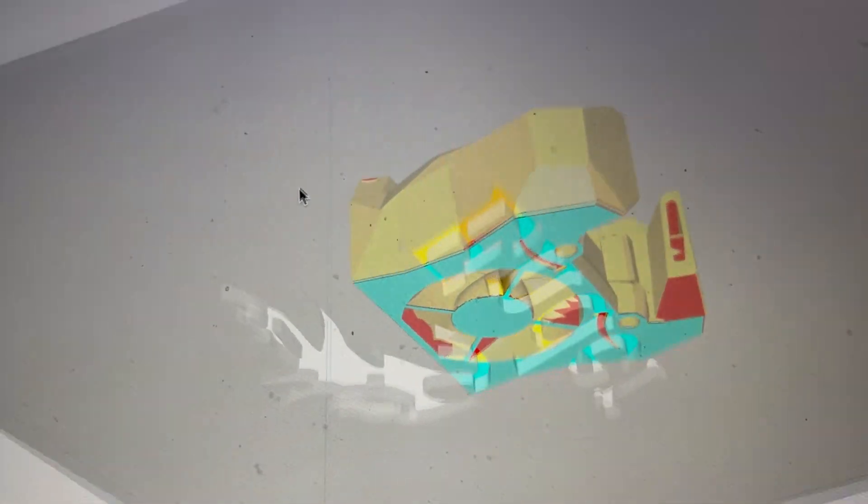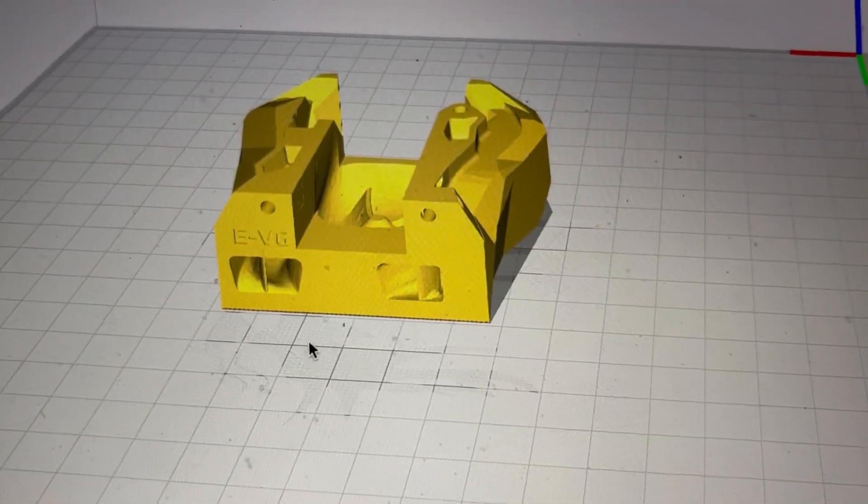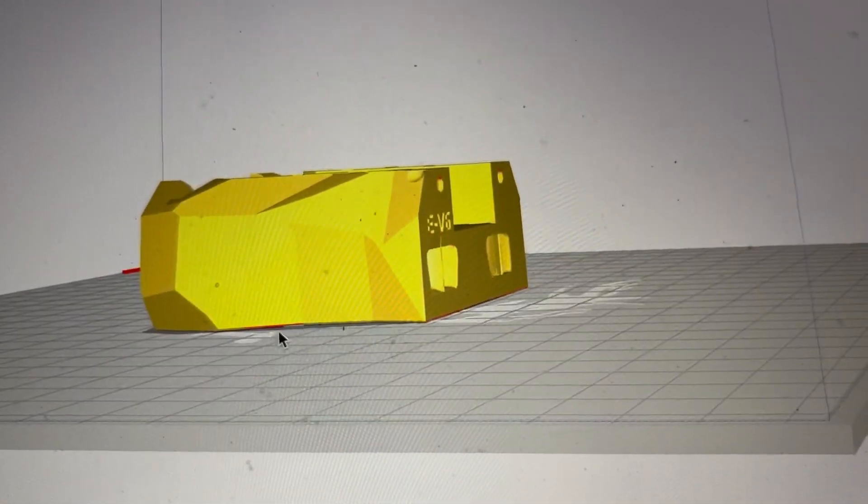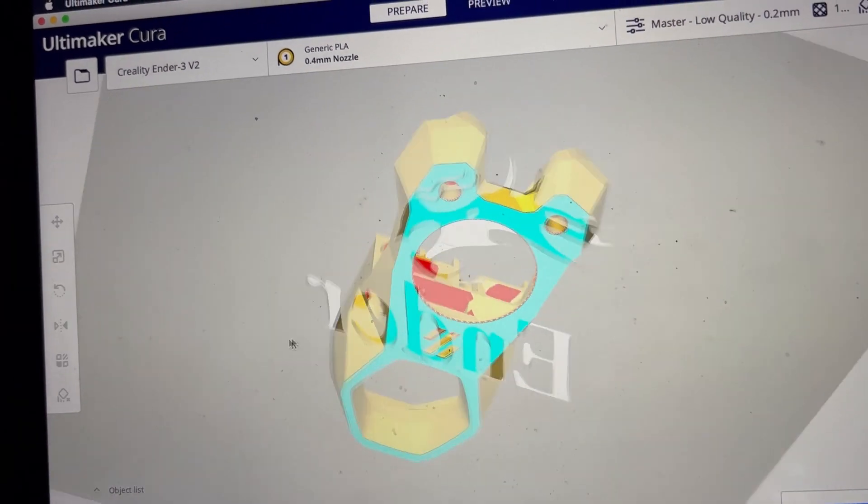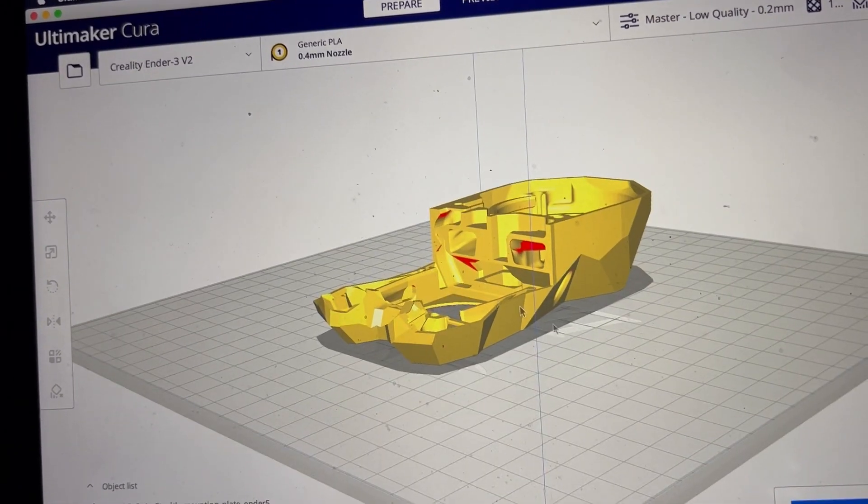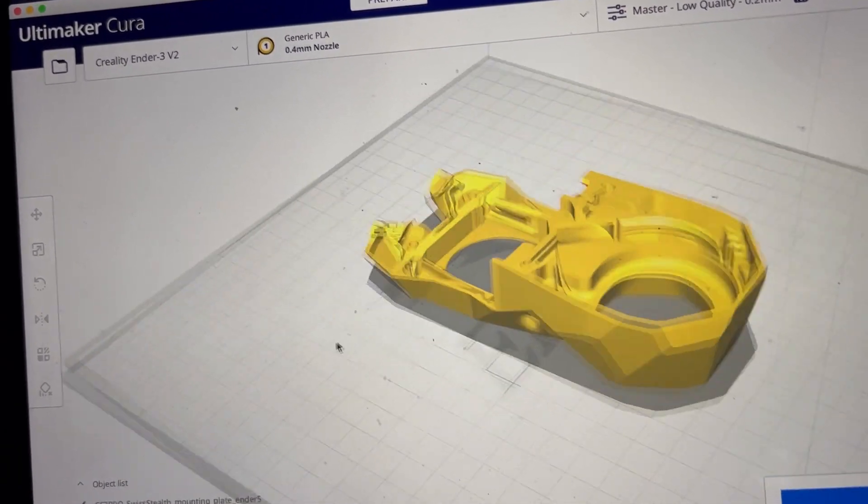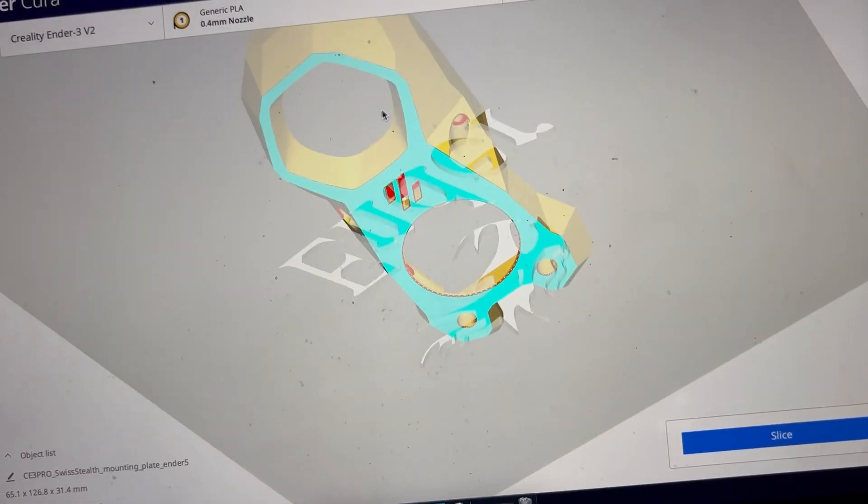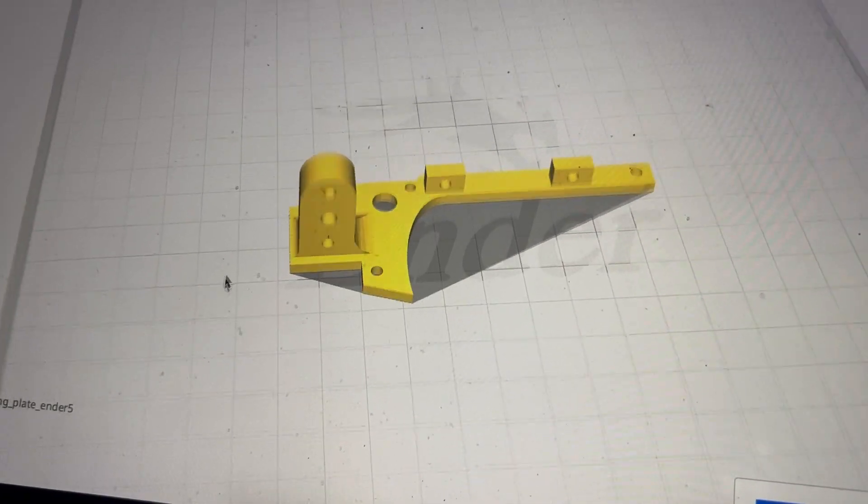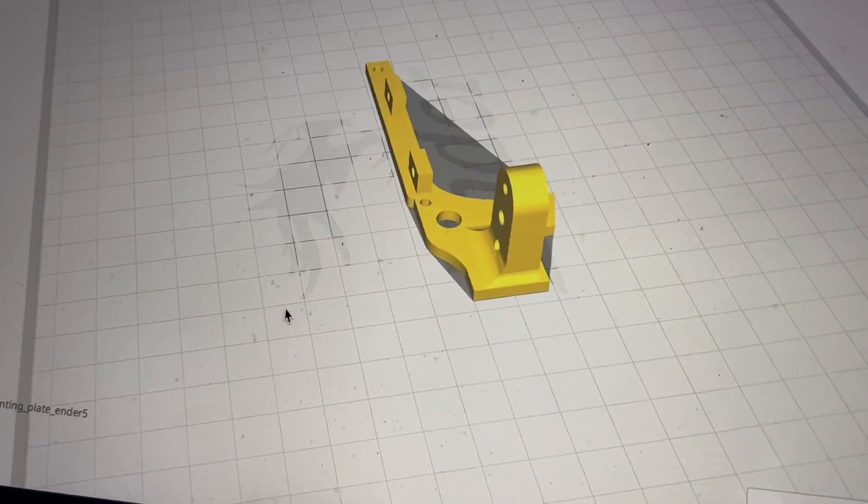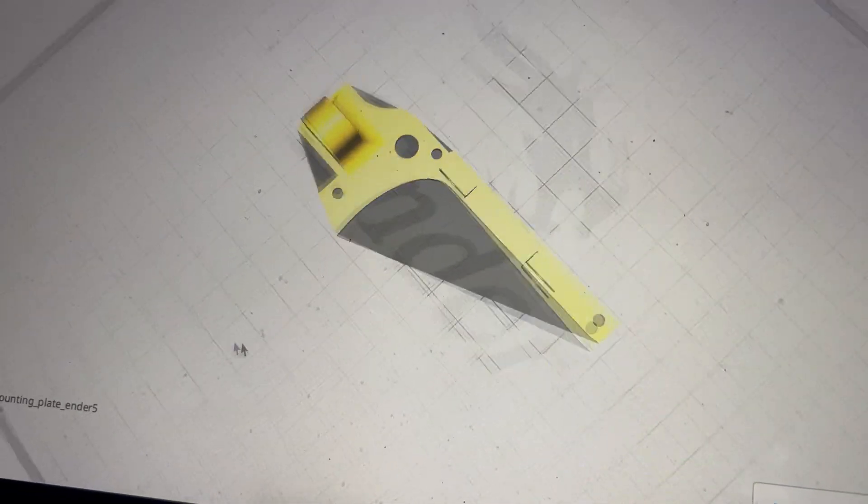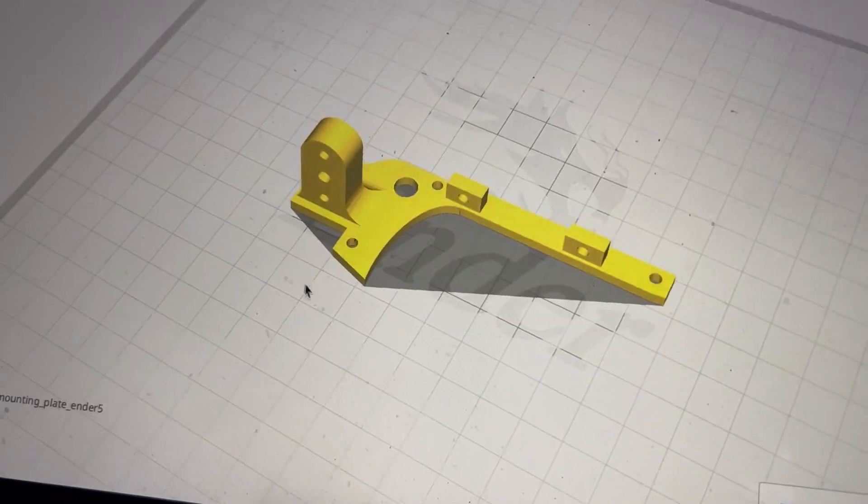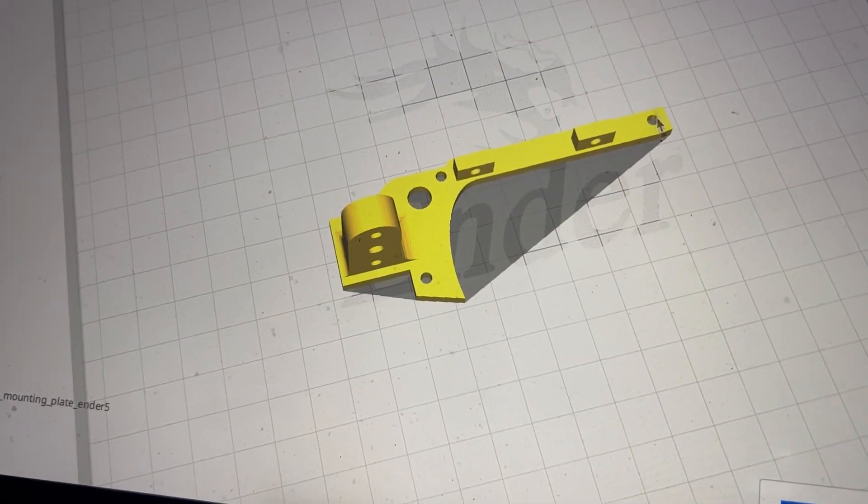The bottom piece is printed in this orientation with no supports needed. It prints great without supports. This piece gets printed in this orientation, and again no supports are necessary. The mounting plate gets printed like this with no supports, but a brim is needed if you don't have great adhesion. You might tend to peel up on this side and at the point here.